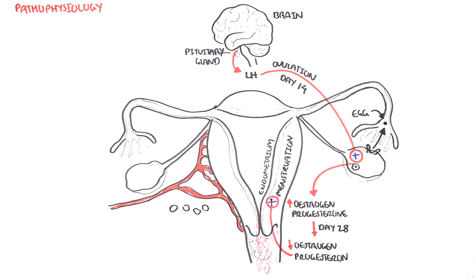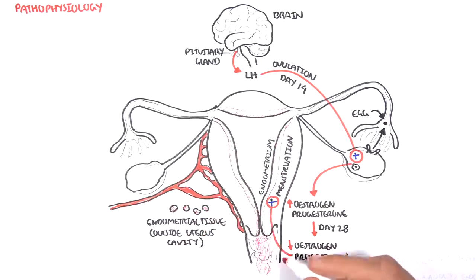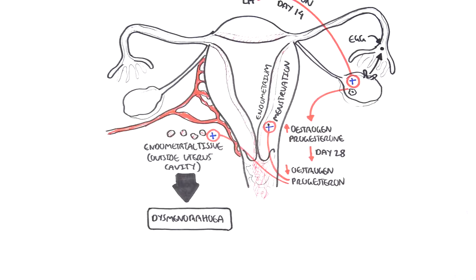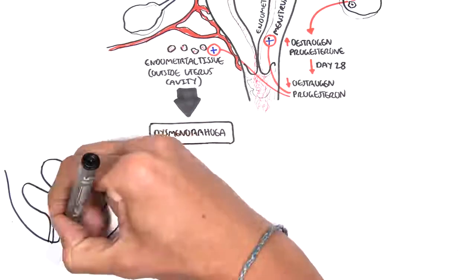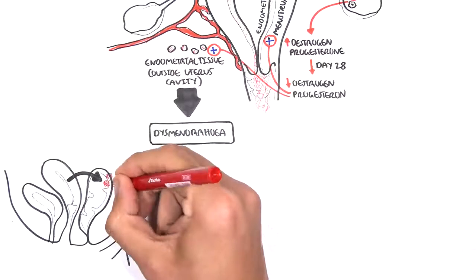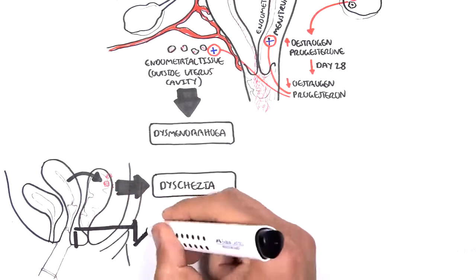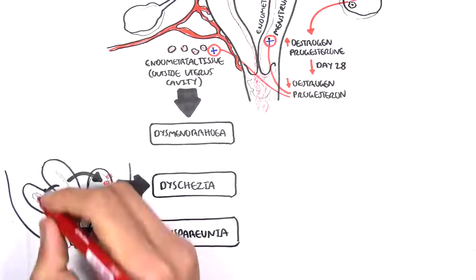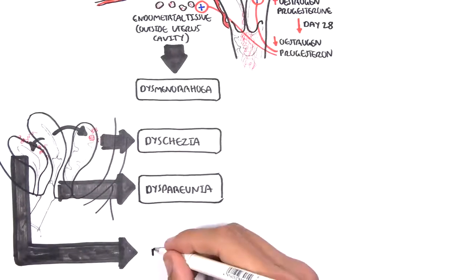In endometriosis, because you have endometrial tissues elsewhere outside the uterine cavity, this ectopic endometrial tissue will also react to the drop in hormones and will also shed, causing really painful periods — dysmenorrhea. If the ectopic tissue is on the bowel or rectum, it can cause dyschezia during periods. It can also cause dyspareunia because of the sensitive genital tract, and if present on the bladder, it can cause dysuria. Just remember the four Ds.